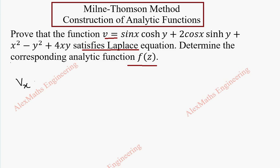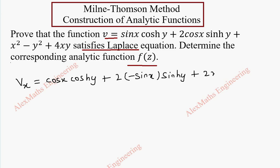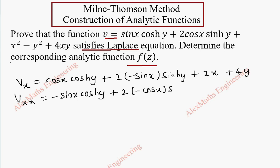We are going to find the partial derivative with respect to x. So sin x derivative is cos x and cosh y is a constant which stays as it is. Plus 2 into cos x derivative is minus sin x and sinh y is a constant and x square is 2x, minus y square is 0, and plus 4y is a constant, x derivative is 1. Again, Vxx we get minus sin x into cosh y plus 2 into minus cos x into sinh y plus 2.